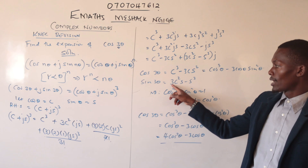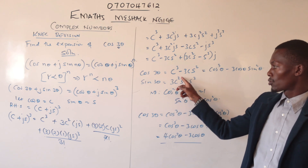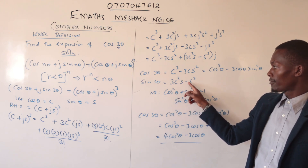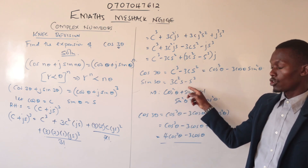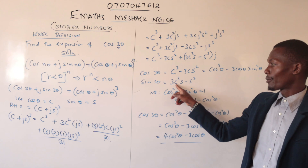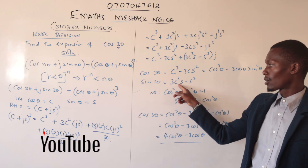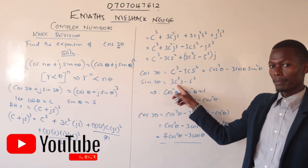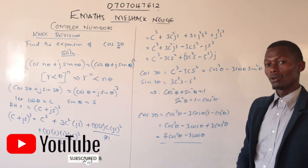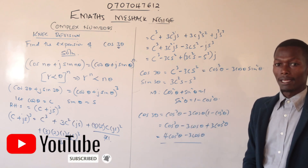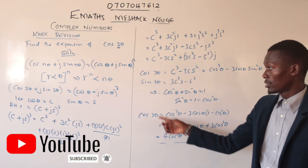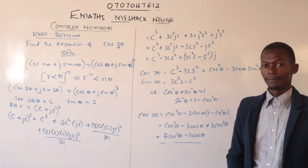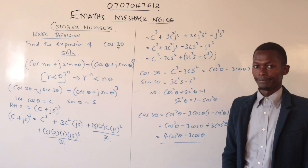You can now try to find sin(3θ) on your own. We have 3cos²(θ)sin(θ) − sin³(θ) from the imaginary part. Replace the cosine terms accordingly and you will get the expansion for sin(3θ).